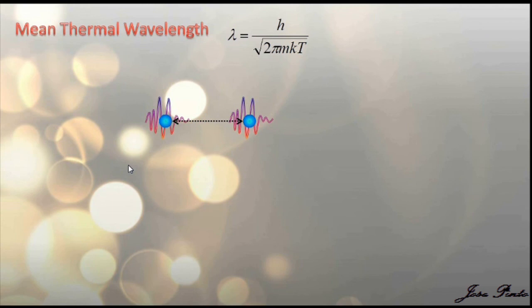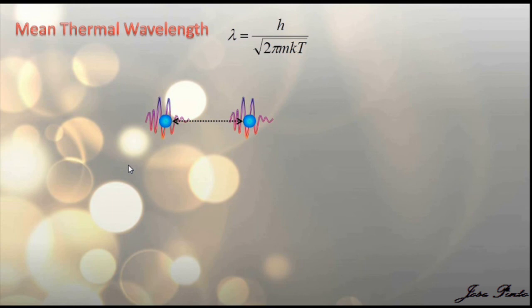But when the mean thermal wavelength is about the distance between the particles in the gas, then the effects of classical mechanics disappear and we have to treat the problem with quantum mechanics. Notice that this happens if I lower the temperature.